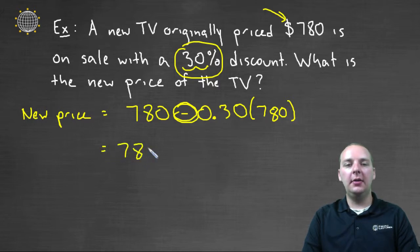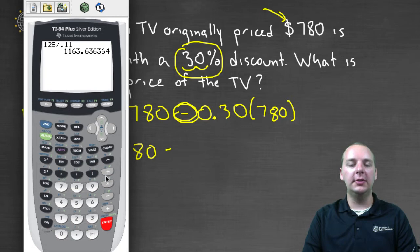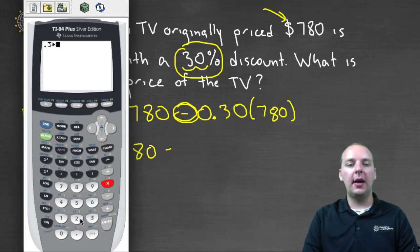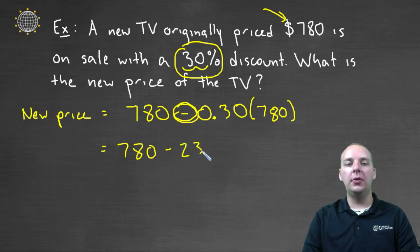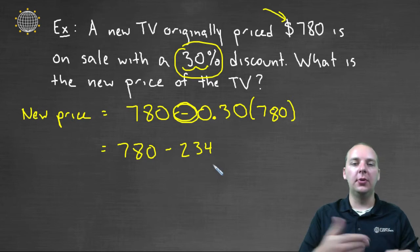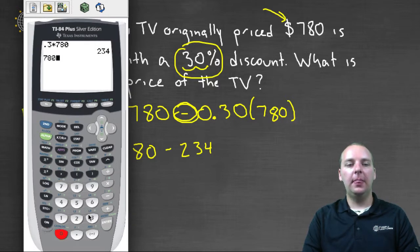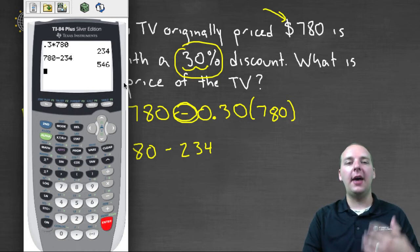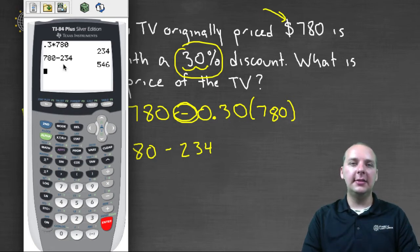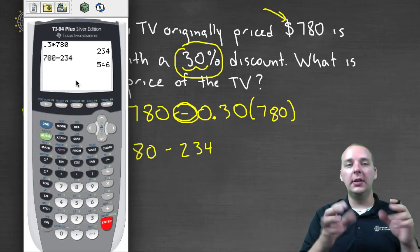So we have seven eighty minus point three times seven eighty. You could do all this at once on a calculator, but we'll do it line by line. Point three times seven eighty — thirty percent of that — gives a discount of two hundred and thirty-four dollars. So we're going to take off two hundred and thirty-four dollars, as opposed to adding two hundred and thirty-four dollars if it had been a markup. Last step: seven eighty minus two hundred and thirty-four dollars gives a new price of five hundred and forty-six dollars after the thirty percent discount.